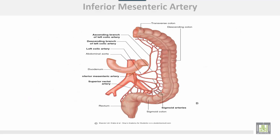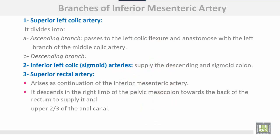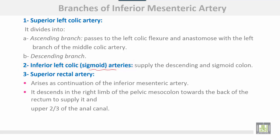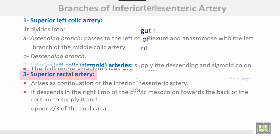The inferior mesenteric artery gives the left colic artery with ascending and descending branches, sigmoidal branches, and continues as the superior rectal artery. The superior left colic artery divides into ascending and descending branches. The inferior left colic or sigmoid arteries supply the descending and sigmoid colon. The superior rectal artery arises as the continuation of the inferior mesenteric artery and descends in the right limb of the pelvic mesocolon towards the back of the rectum to supply it and the upper two-thirds of the anal canal.